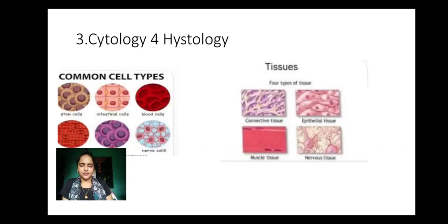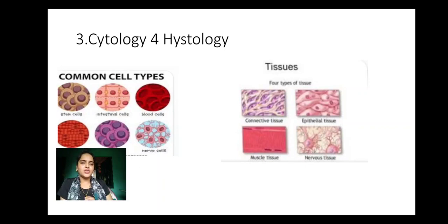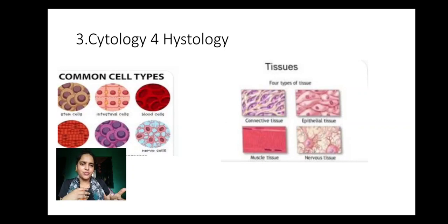Next we have cytology. Cytology is the branch of biology which deals with the study of cells. Cell is the structural and functional unit of life — all living organisms are made up of cells. Next we have histology. Histology is the branch of biology which deals with the study of tissues. A tissue is a group of similar cells that aggregate and perform a similar function together. The branch dealing with the study of tissues is called histology.